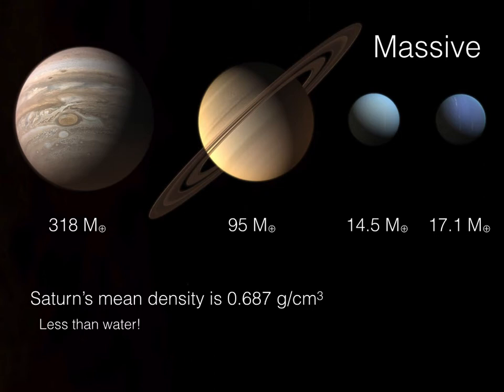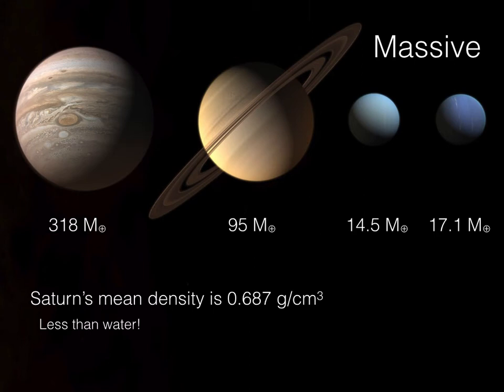These giant planets have relatively low densities. They're large and fairly massive, but their densities are low enough that Saturn in particular has a mean density less than water. Water equals one gram per cubic centimeter; Saturn is about 0.7 grams per cubic centimeter. In other words, if you could manufacture a bathtub large enough and place Saturn in it, you would find Saturn bobbing in the giant bathtub. It's kind of cool to calculate that Saturn can actually float.